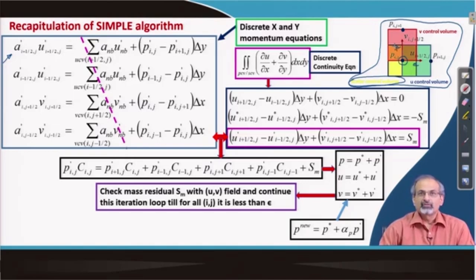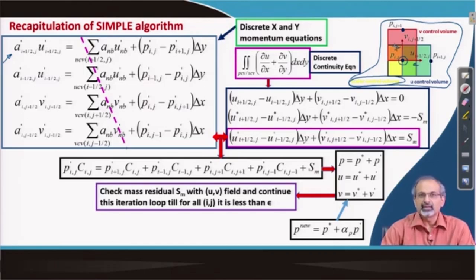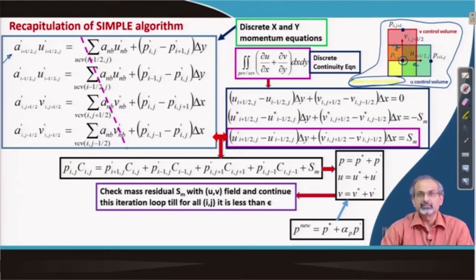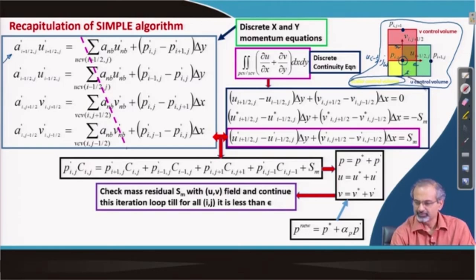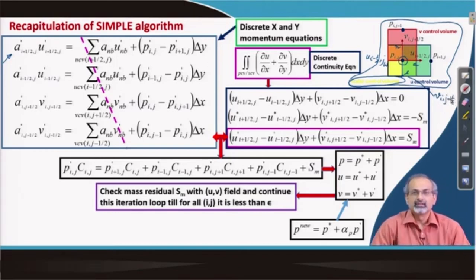We are trying to come up with a discrete form of the continuity equation, and for that we need to write expressions for the velocities on all 4 faces of the scalar control volume. On the east face we have u_{i+1/2,j}, on the west face u_{i-1/2,j}, on the north face v_{i,j+1/2}, and on the south face v_{i,j-1/2}. This is how the 4 face velocities are represented.